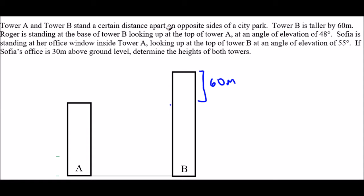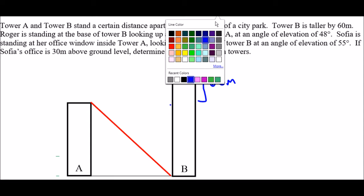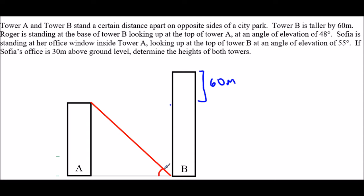Okay what else do I know? We know that Roger is standing at the base of Tower B looking up at the top of Tower A. So Roger's standing here and he's looking up. So this red line represents his line of sight. He's standing at the base of Tower B and looking up at Tower A and we're told that the angle of elevation is 48 degrees.